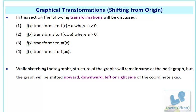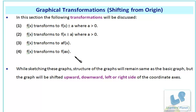Here we will be discussing graphical transformation, that is shifting of origin. There are various types of transformations: when f(x) is converted to f(x) ± a, where a is greater than 0, or f(x) transformed to f(x ± a). In the first case a is added to f(x); in the second, a is added to x. Also, f(x) transforms to a·f(x) and f(x) transforms to f(ax). While we sketch these graphs, the structure remains similar to the basic graph, but the graph either shifts upwards, downwards, left, or right of the coordinate axis.